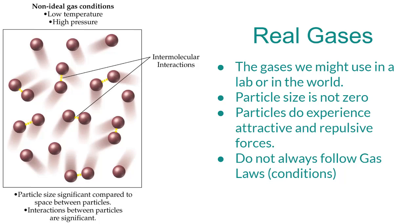Real gases refer to actual gases that are in the lab or in the world. Particle size is not zero — particles actually have a size, they take up space, they have a volume. And all gas particles exhibit some kind of interactions — intermolecular attractions or interactions with other gas particles. For some gases, those intermolecular attractions are very strong, and they are going to affect how easy it is to move those gas particles around. So real gases don't always follow the gas laws because the size of the particles and the interactions between them are going to affect their behavior.